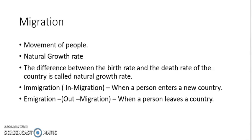Migration is of two types. One is known as immigration or in-migration — when a person enters a new country, it is known as immigration or in-migration. The other is emigration or out-migration — when a person leaves the country, it is known as emigration or out-migration.